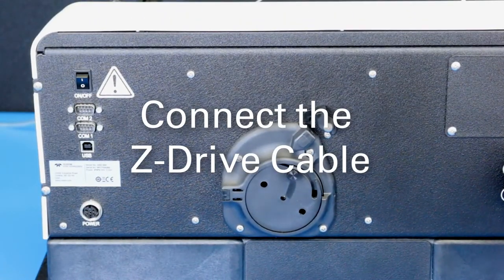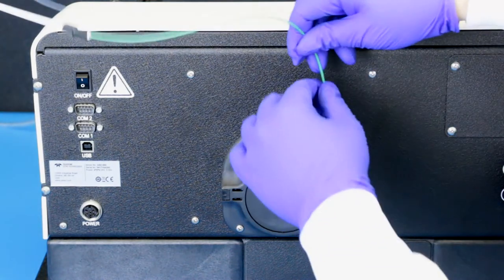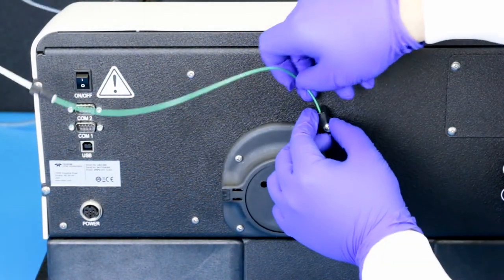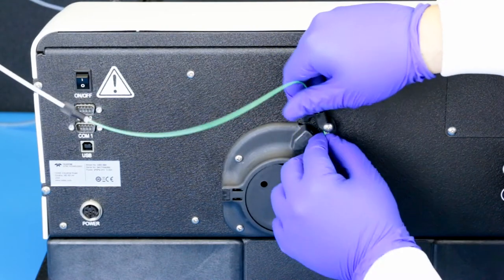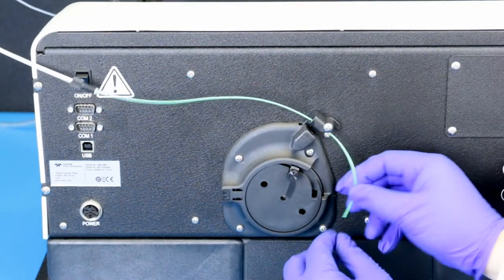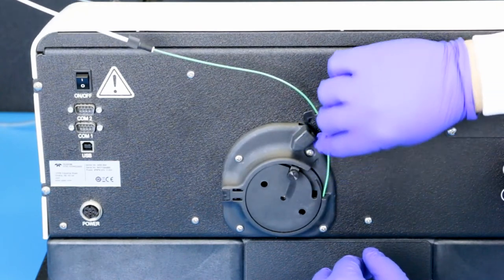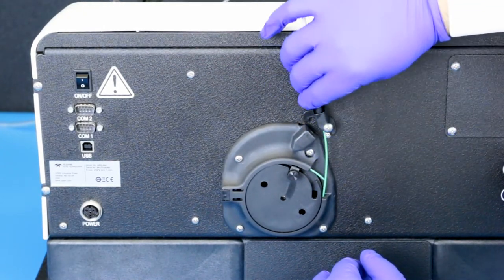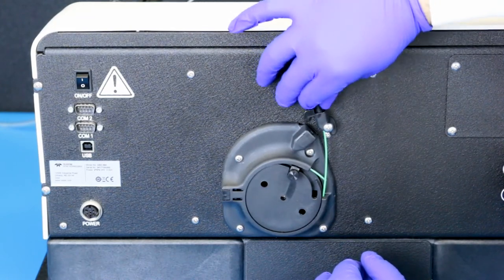Connect the Z drive cable. Feed the cable through the rear guide block and around the rotor. Tighten the nut to secure the cable sleeve to the guide block.